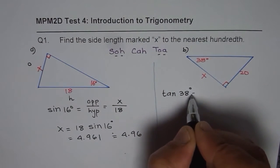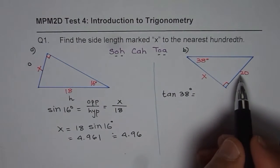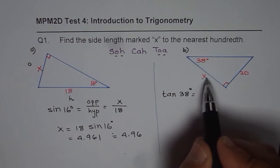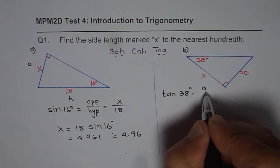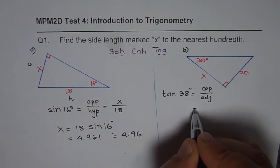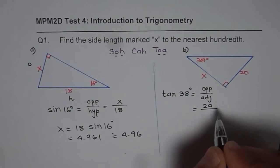Tan of 38 degrees in this case will be opposite side over adjacent side. So opposite side is 20, adjacent for us is X. So we can write this as 20 over X.